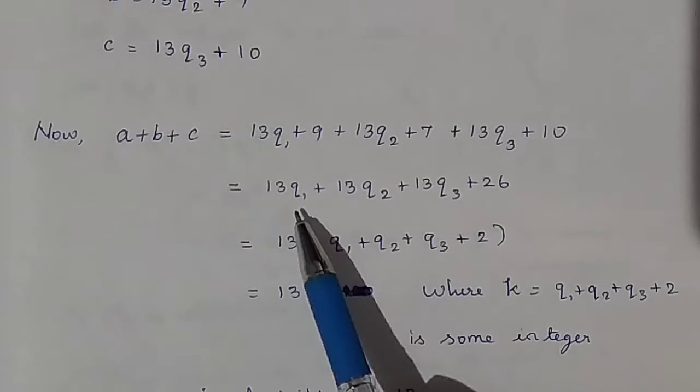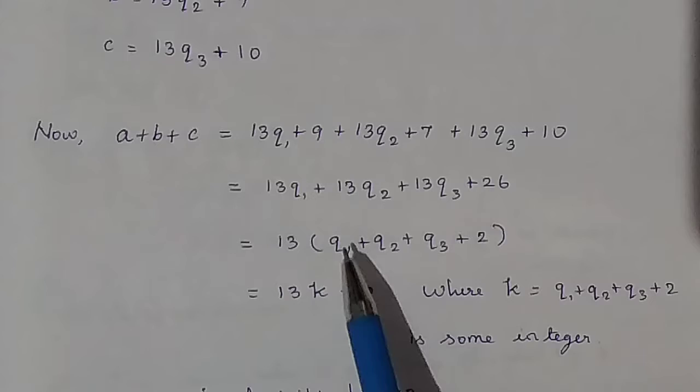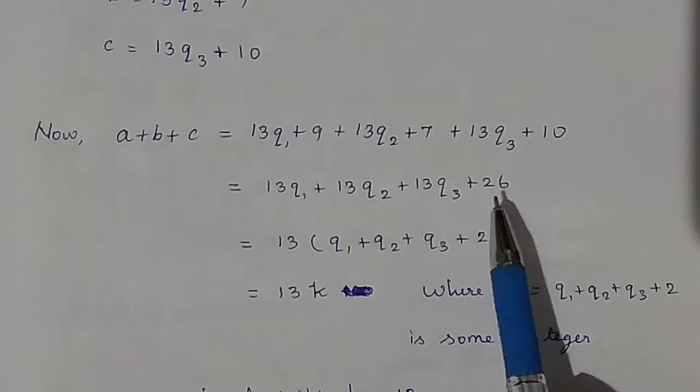Taking 13 as a common factor outside: 13 times (q1 plus q2 plus q3 plus 2).